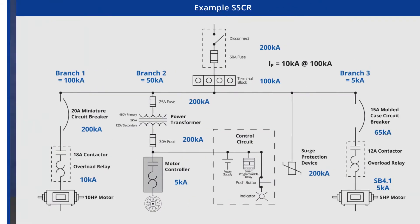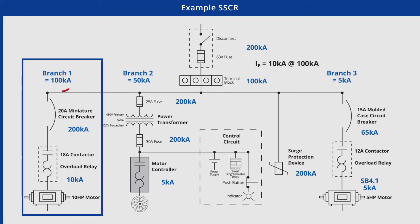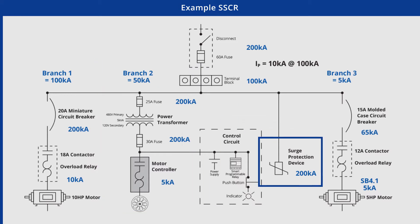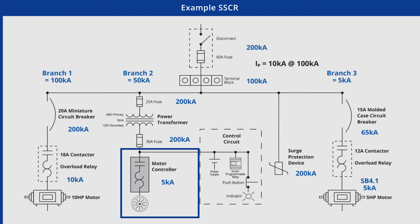Let's take a look at an example SCCR. In this example, you can see that branch one has a 100 kA rating, but the overload relay has only a 10 kA rating. Moving over to branch two, the motor controller has a 5 kA rating. The surge protection device has a 200 kA rating, and the 5 horsepower motor carries a 5 kA rating as well. By identifying the SCCR for all of these components, you can see that the motor controller's 5 kA rating is the rating for the entire panel. So the SCCR for the panel is 5 kA.